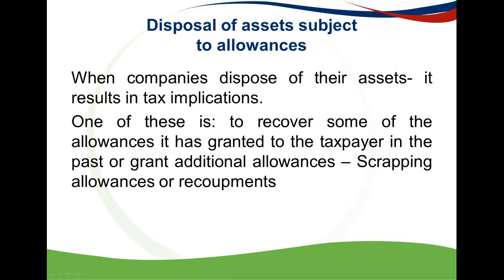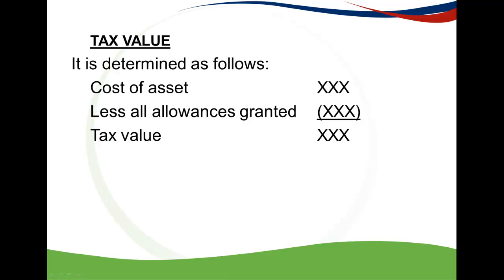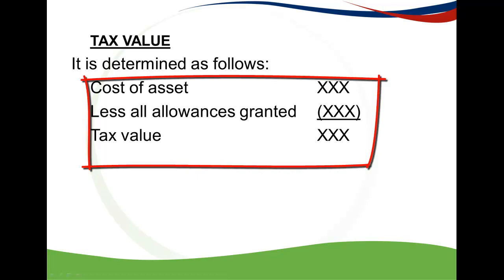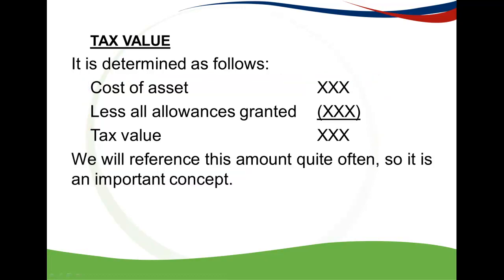Before we look at scrapping allowances or recoupments, we first need to look at the concept of what a tax value is. A tax value is calculated by taking the cost of the asset and from that deducting any allowances granted on the asset — that will equal the tax value. We will reference this amount quite often, so it's an important concept to keep in mind.